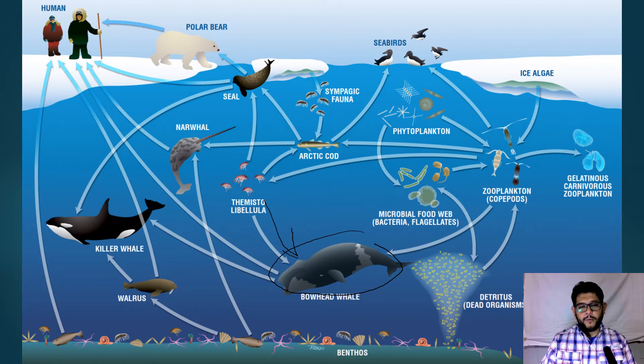We call the apex predators - the human itself, the polar bear, and then seabirds - they're pretty high up in the food chains as well but they all eat different things. You can see that this describes whether they're omnivores or herbivores or carnivores and the whole way it works. Eventually a lot of these nutrients end up coming back through detritus, which is the dead organisms and stuff, so it gets more complicated.